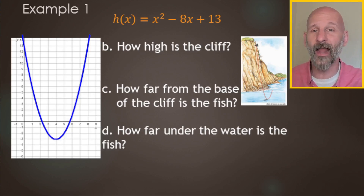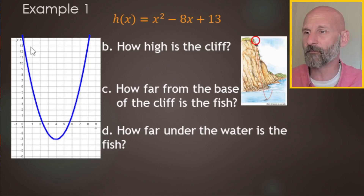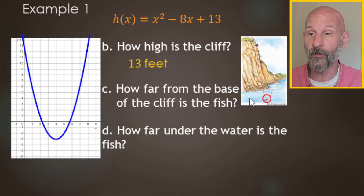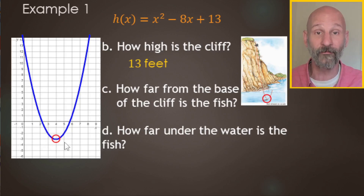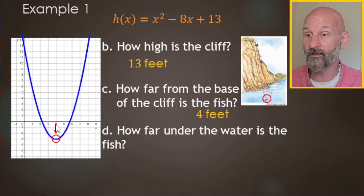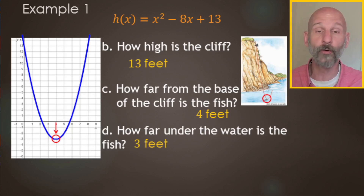Now that we have the graph, we can answer questions about the scenario. How high is the cliff? That shows up as the y-intercept, which is 13 feet. How far from the base of the cliff is the fish? The fish is at the vertex, and the cliff is at the y-axis, so the fish is four feet from the base. How far under the water is the fish? That's the y value of the vertex: three feet below the water, or negative three feet.